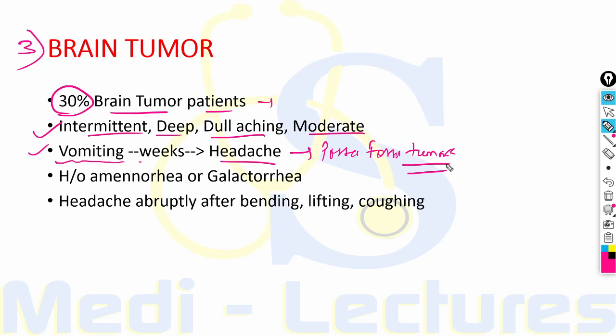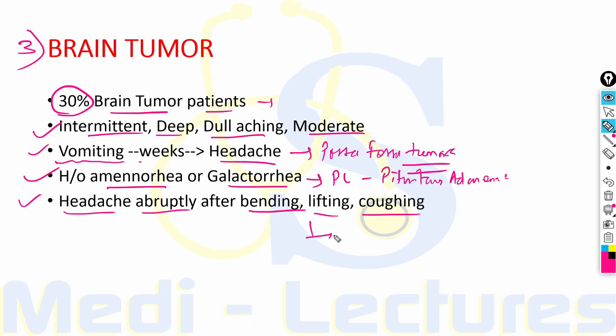If the patient has history of amenorrhea or galactorrhea, there can be a prolactin-releasing pituitary adenoma. Headache abruptly worsening after bending, lifting or coughing can be seen in posterior fossa mass, Chiari malformations, as well as low CSF volume headache.